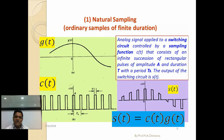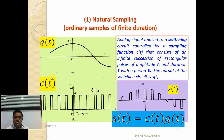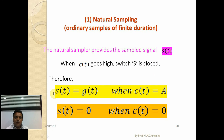In natural sampling, the analog signal is applied to a switching circuit controlled by the sampling function c(t). At time t = 0, it consists of an infinite succession of rectangular pulses of amplitude A and duration τ with period T_s. The output of the switching circuit is s(t). Natural sampling means its top follows g(t) — it is exactly equal to g(t) times c(t) multiplied together.